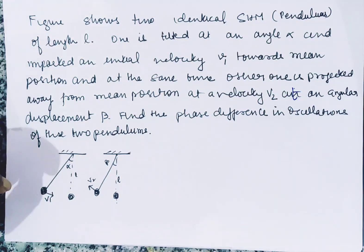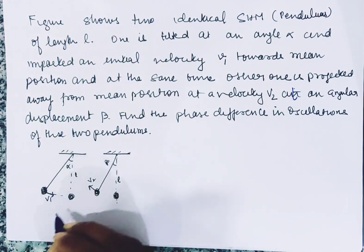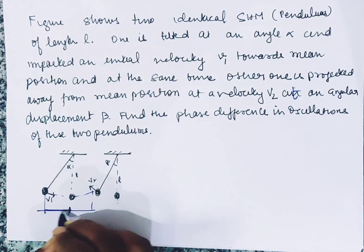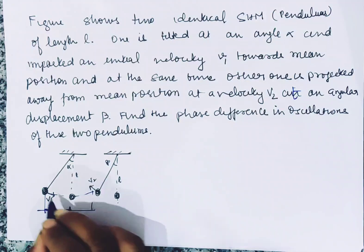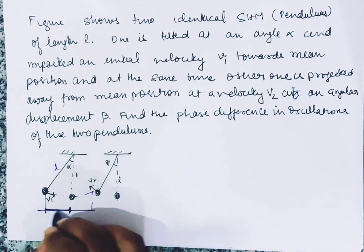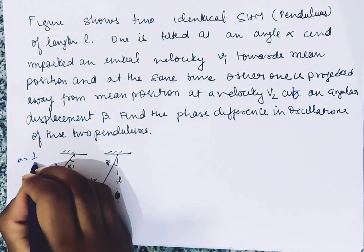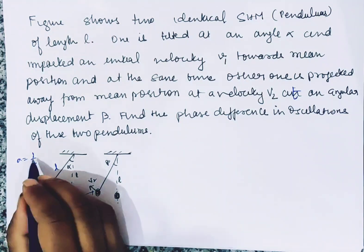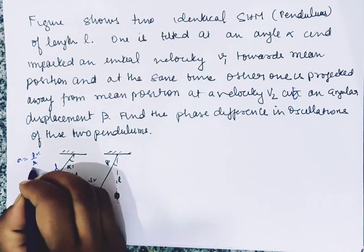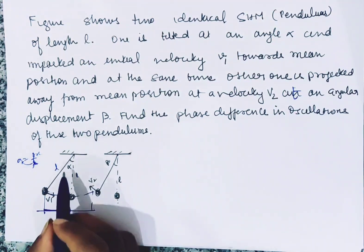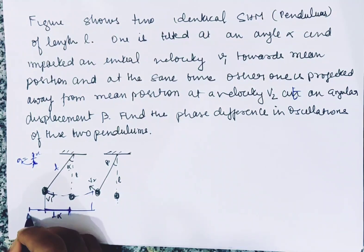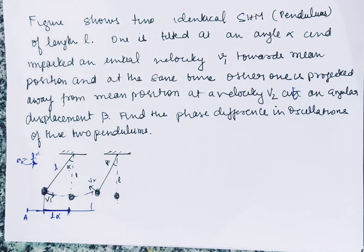SHM pendulum के case में इस distance को हम x बोलते हैं, और यह distance amplitude नहीं है। अगर हम L लें तो arc = L×alpha होगा, क्योंकि angle = arc/radius, radius is L, तो arc = L×alpha। तो जहाँ भी angle alpha हो, वहाँ की position L×alpha होती है। यह L×alpha है और amplitude अलग हो सकता है, amplitude हमको नहीं बताया गया।